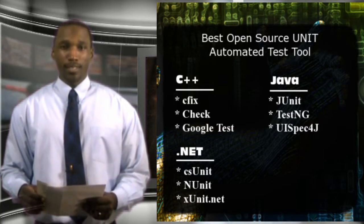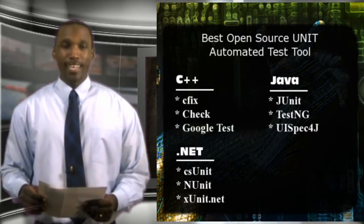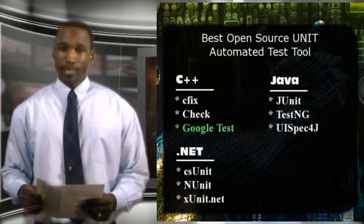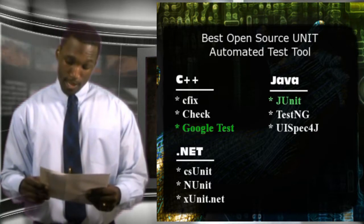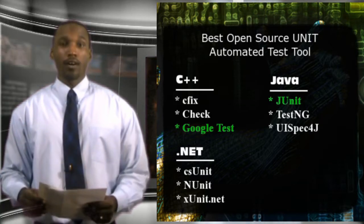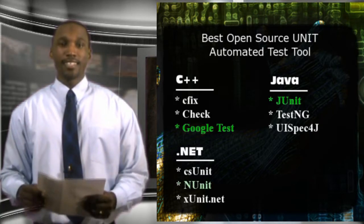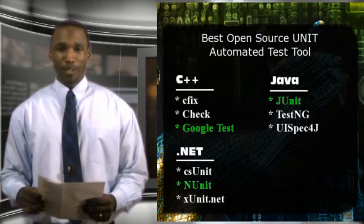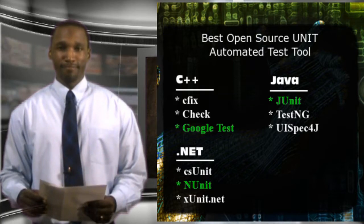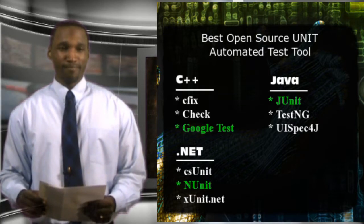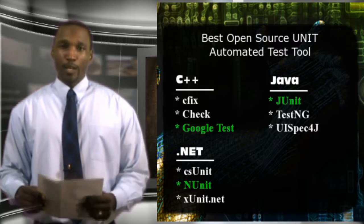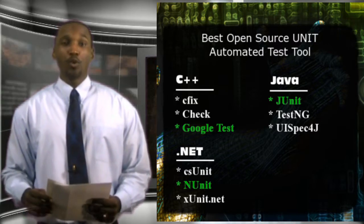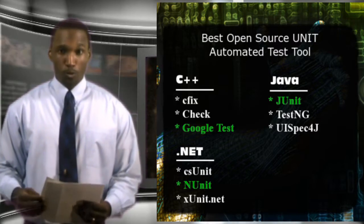For the C++ category, the winner is Google Test. For Java, it is JUnit. And for .NET, the winner is NUnit. Congratulations to all of these tools.